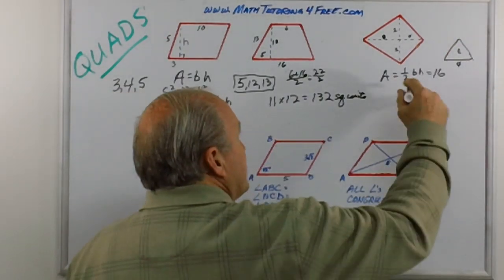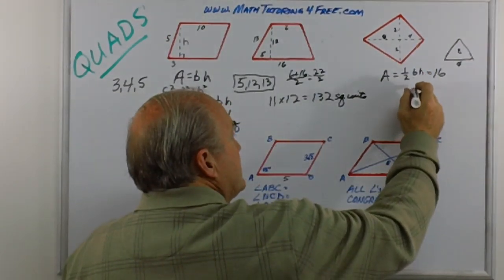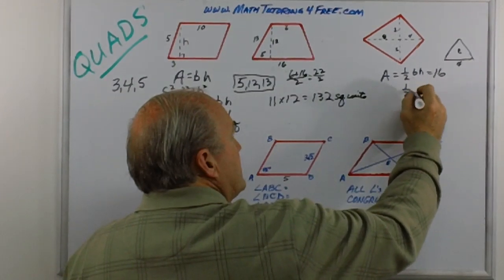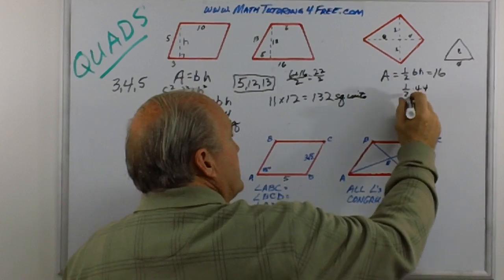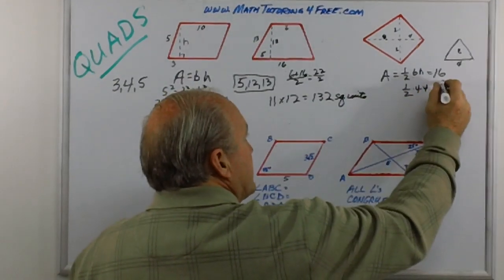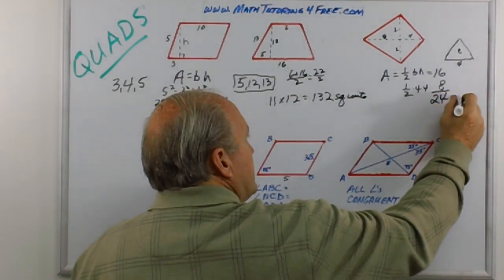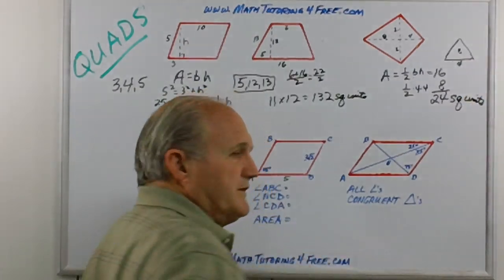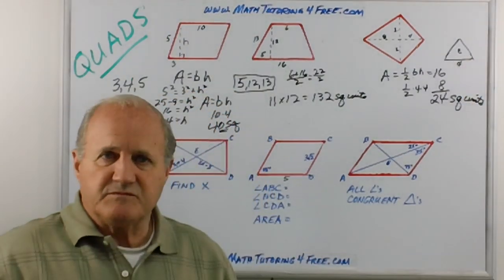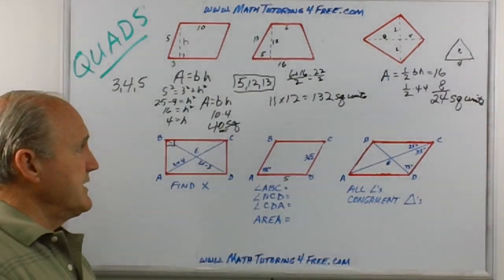The other one, you've got height of four and a base of four. So you've got one half times four times four. Half of four is two, two times four is eight. Then what do we have to do? We have to add those together. So 24 square units. Hopefully you find those pretty simple and no real challenge for you.